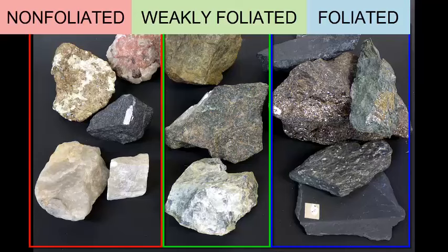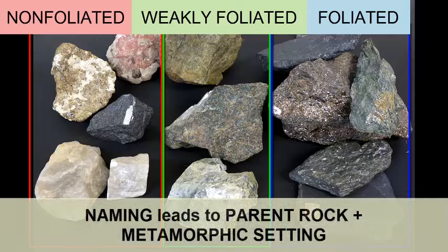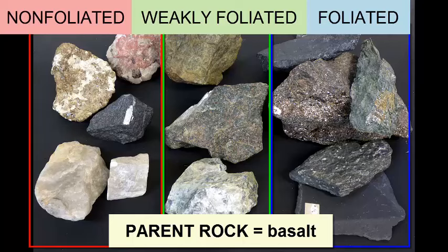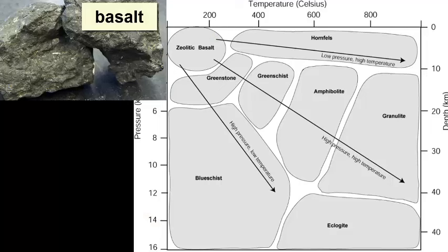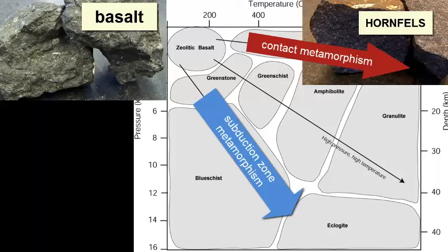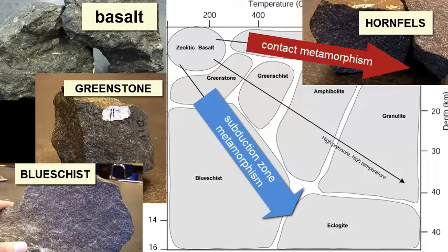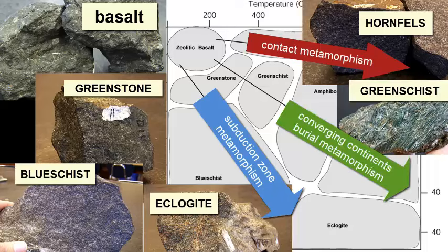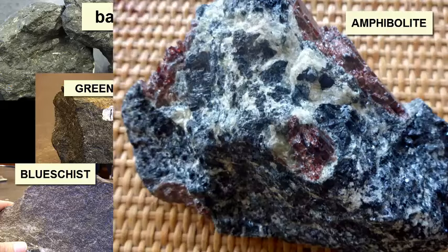Looking at all these rocks together, we see that with metamorphic rocks in particular, the identification and naming process leads directly to the parent rock and metamorphic formation setting. Once you name a metamorphic rock, you can learn quite a lot about its formation history. For example, if basalt is placed in a contact metamorphic setting, it turns to hornfels. If it's placed in a subduction zone, it turns to greenstone, then blueschist, then eclogite. If it's buried deeply, it becomes greenstone, then greenschist, then a rock called amphibolite.